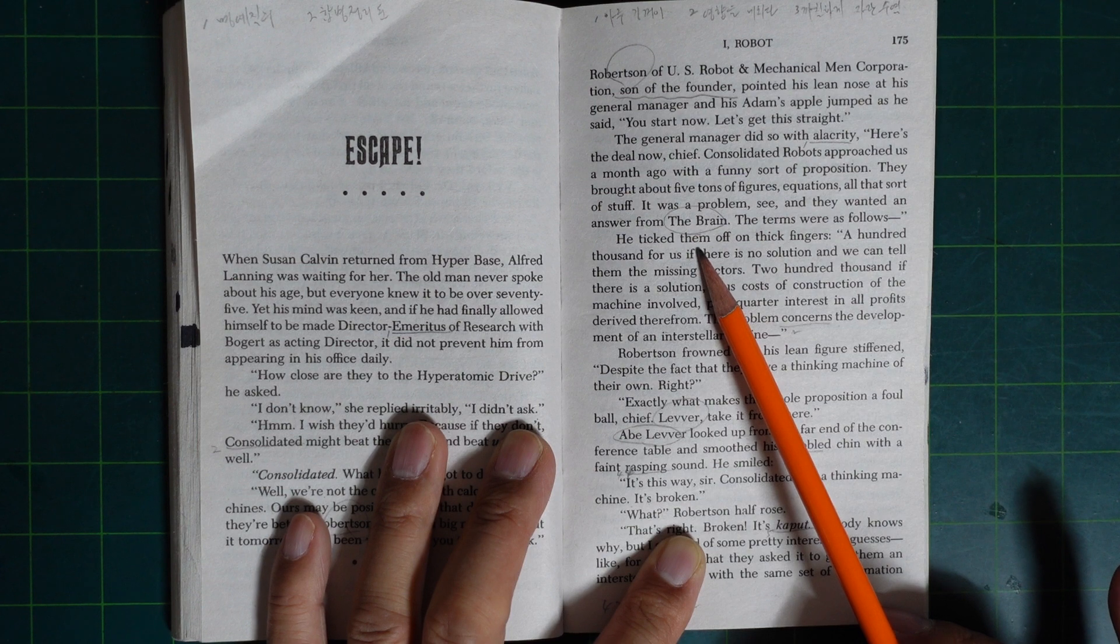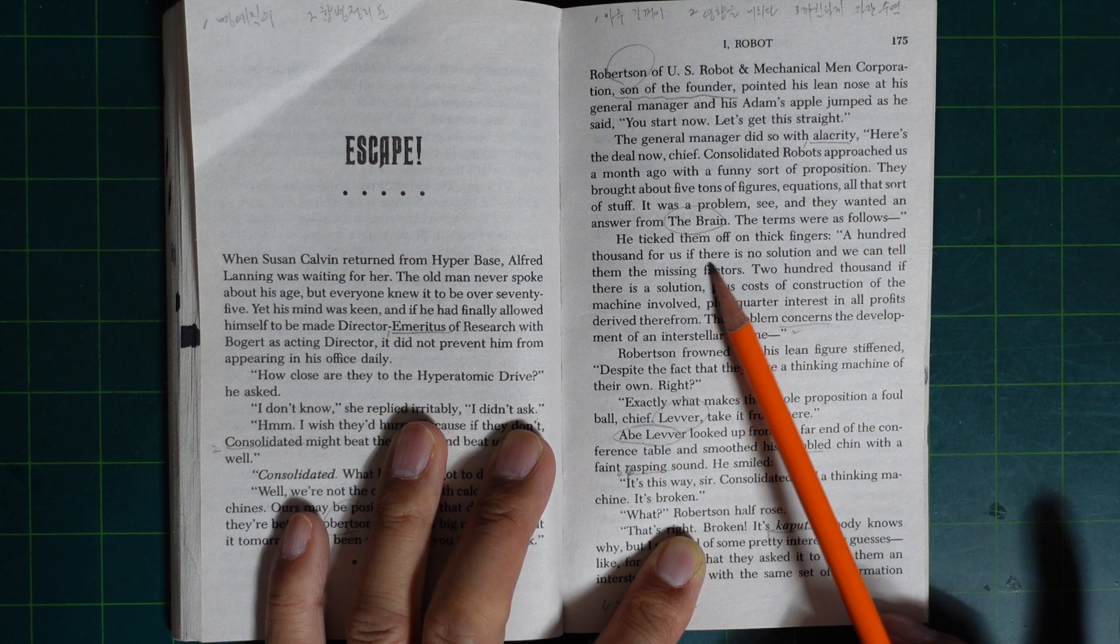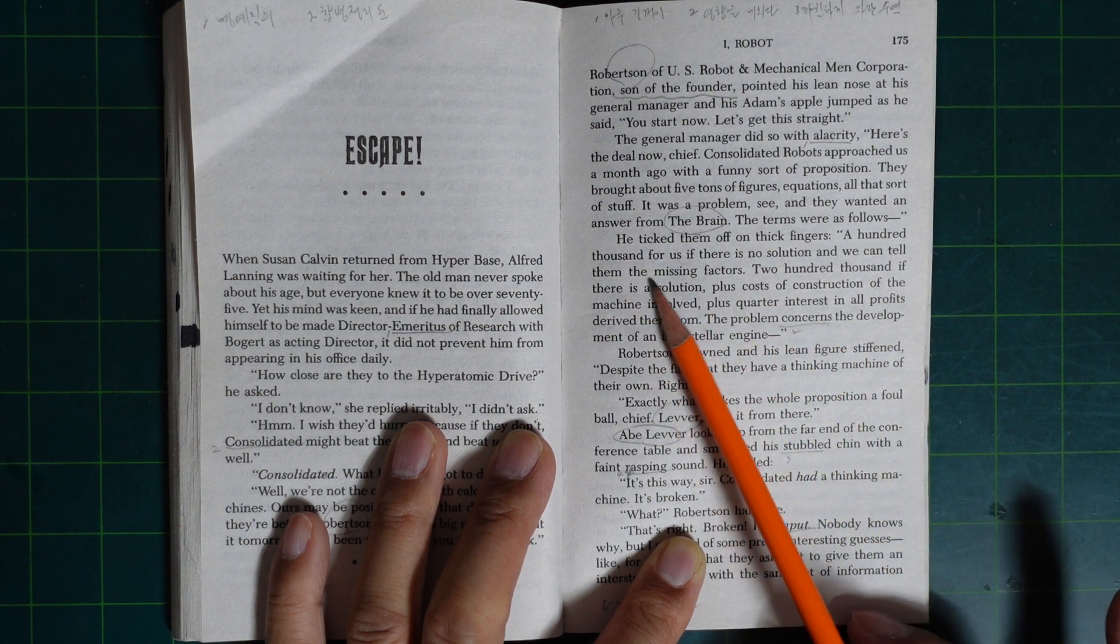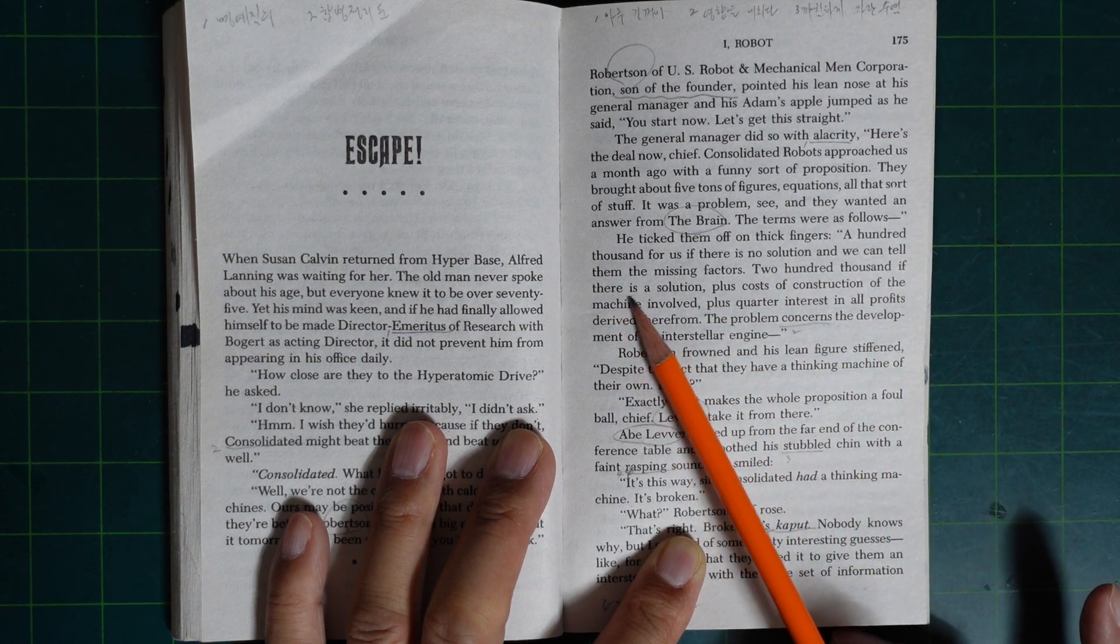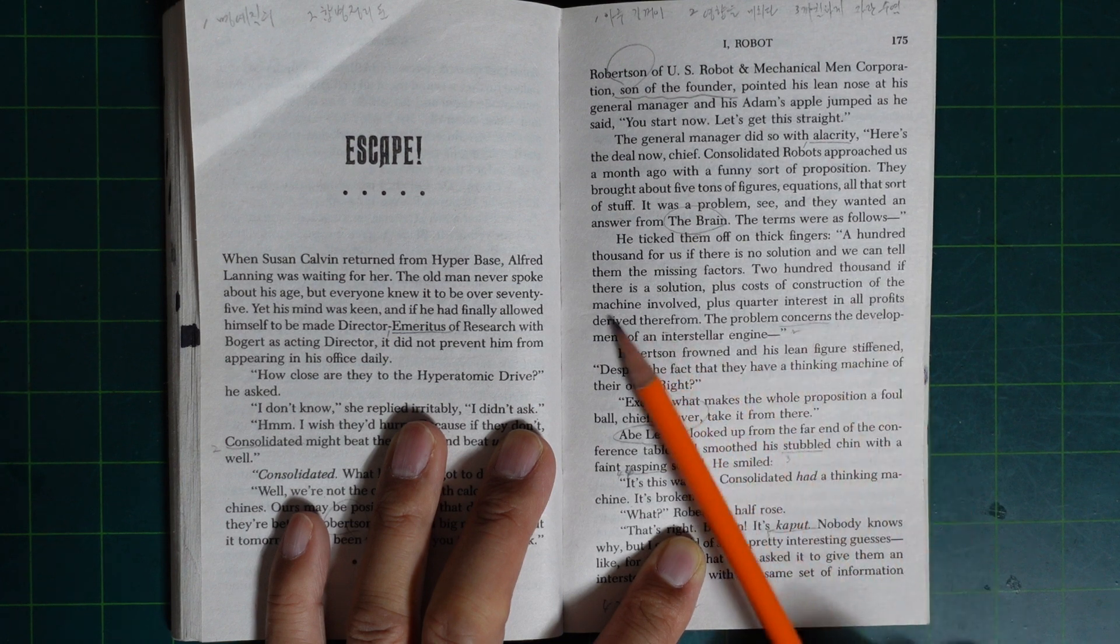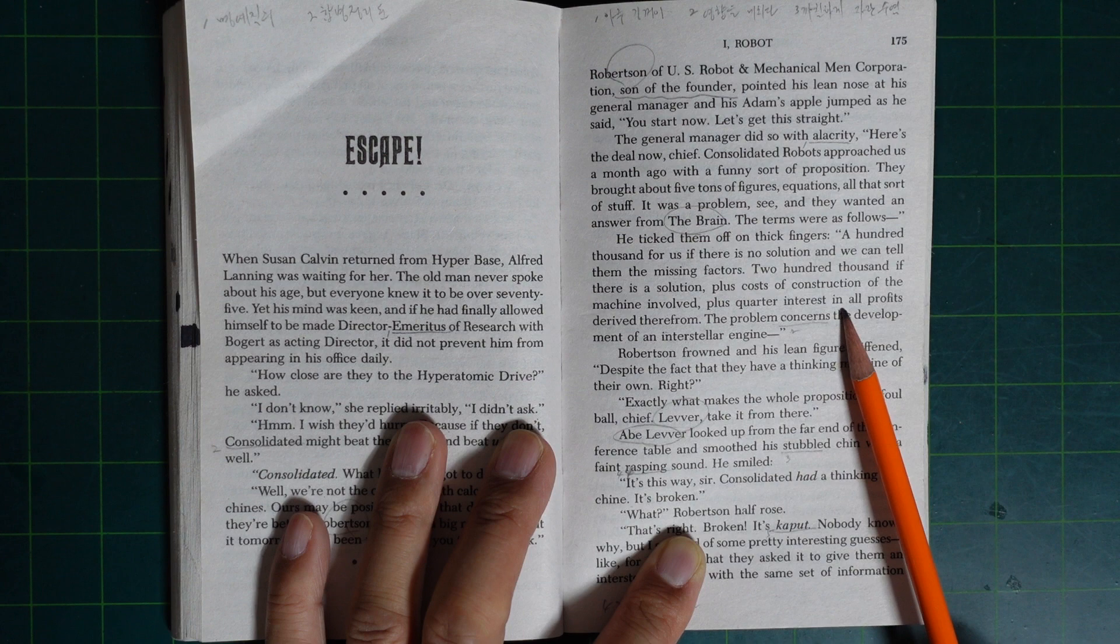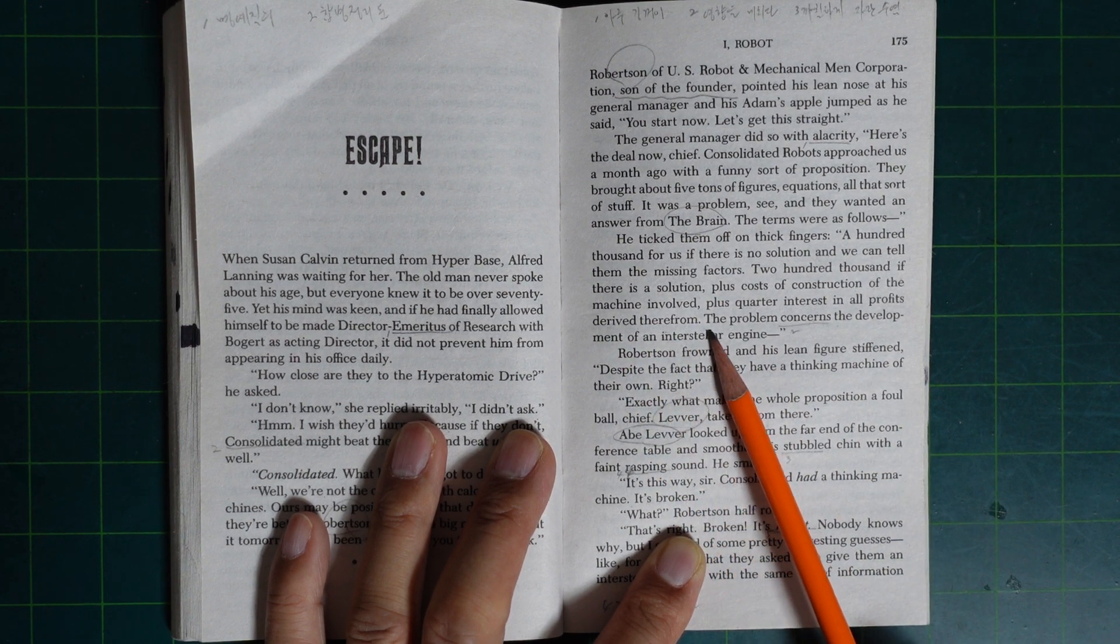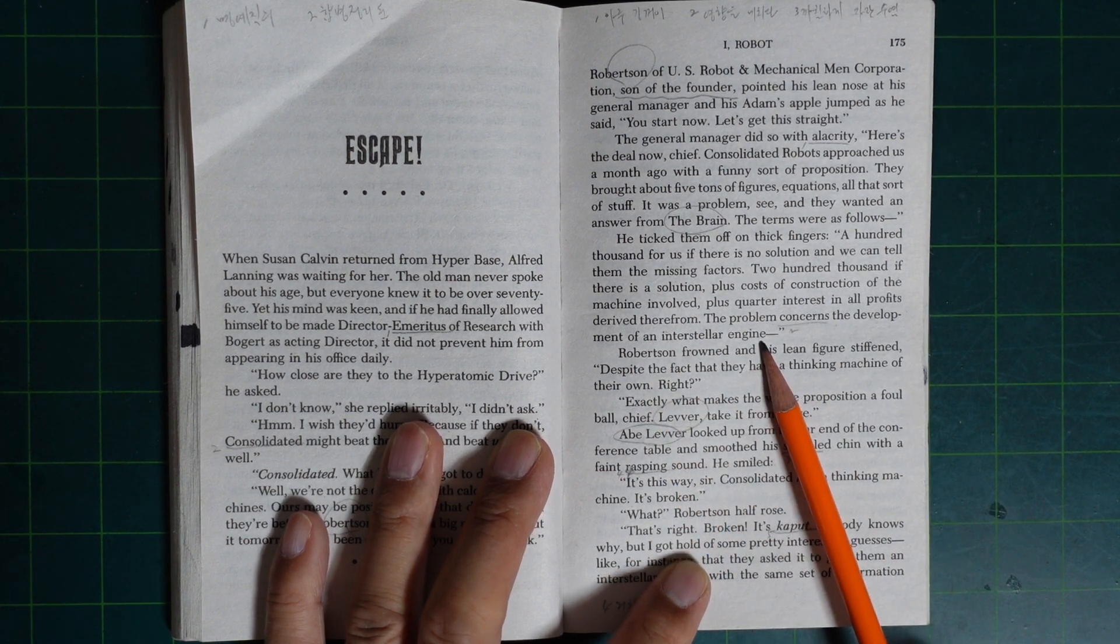And they wanted an answer from the Brain. The terms were as follows: a hundred thousand for us if there is no solution and we can tell them the missing factors. Two hundred thousand if there is a solution, plus cost of construction of the machines involved, plus quarter interest in all profits derived therefrom.